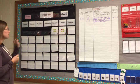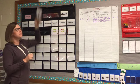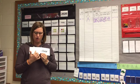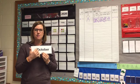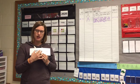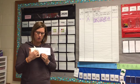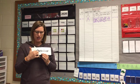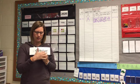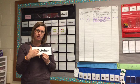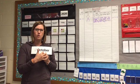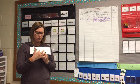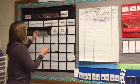We are in the month of October. October starts with a capital O because it is the name of a month. When we're studying vowels, we know that vowels make a short sound and a long sound. The short vowel sound for October is 'ah,' but this O says the long vowel name, the O. So October is the month we are in.